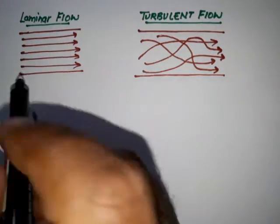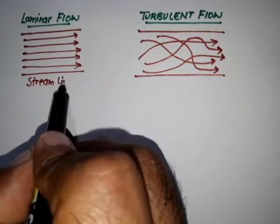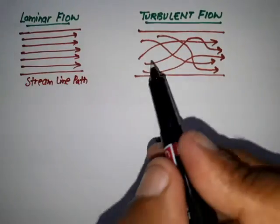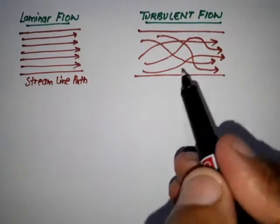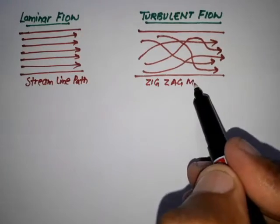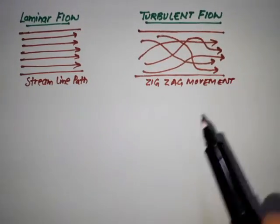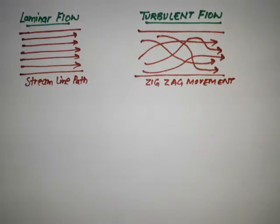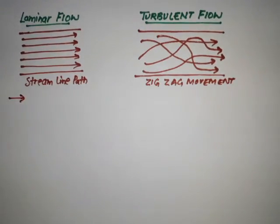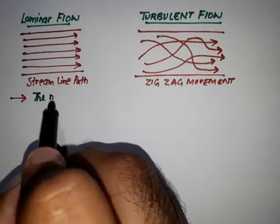Here we can see in laminar flow there is a streamline path for fluid particles, and here in turbulent flow there is zigzag movement of fluid particles. And this all we try to understand with a common example that the motion